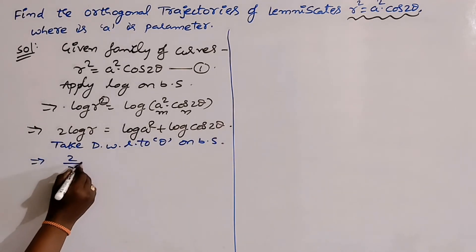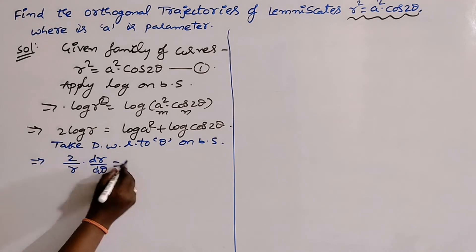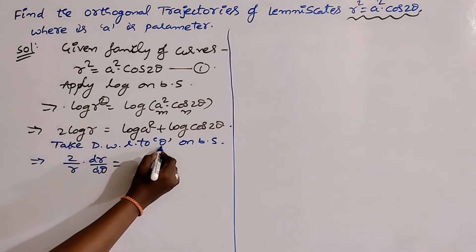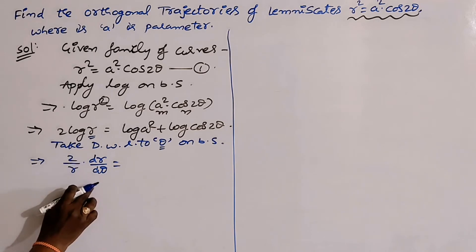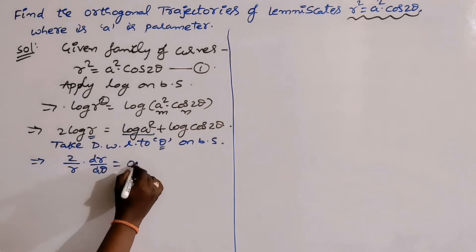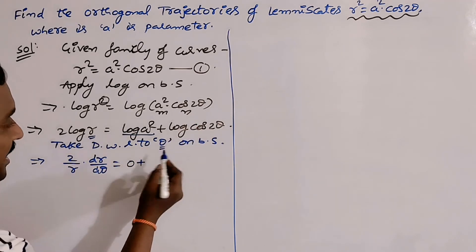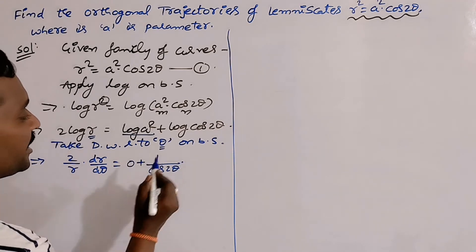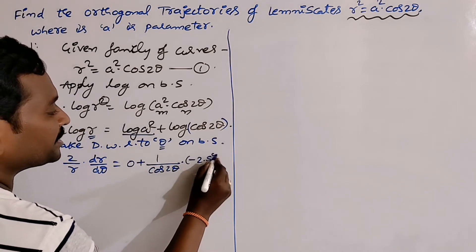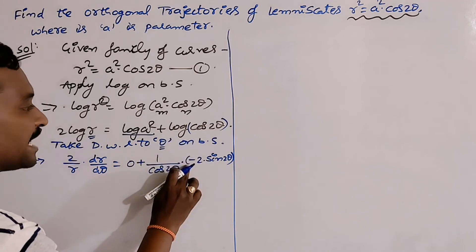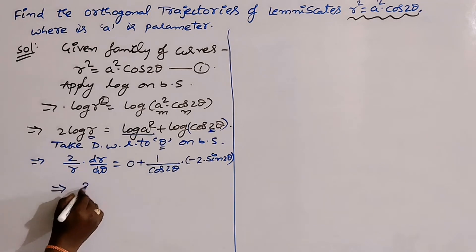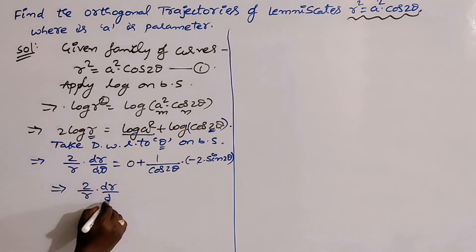Now take the derivative with respect to θ on both sides. You get 2/r · dr/dθ. The derivative of log r is 1/r, and 2 is already there, so we get 2/r · dr/dθ. Log(a²) is entirely constant since 'a' is the parameter, so its derivative is 0. For log(cos2θ), using the form log x giving 1/x, we get 1/cos2θ · (-2sin2θ), since the derivative of cos is -sin and the coefficient of θ is 2.